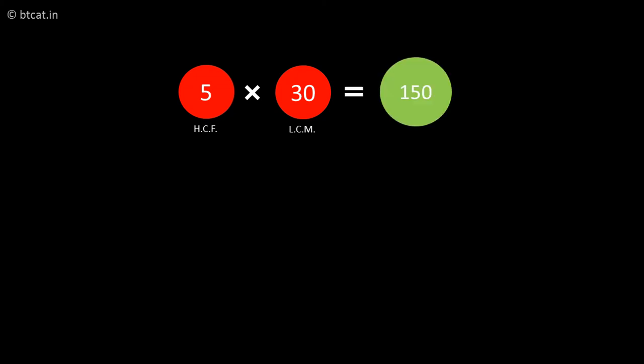Now what I want to tell you is a very important rule. If I multiply the HCF and LCM in the above case, for example 5 into 30, I will get 150. And you know what? 150 is same as multiplication of the numbers 10 and 15—10 into 15 which will also give me 150.